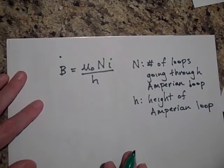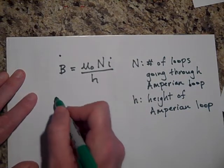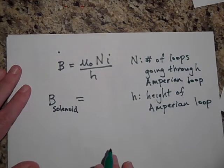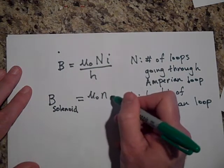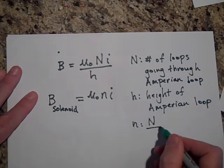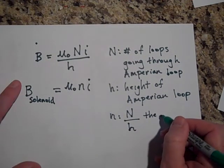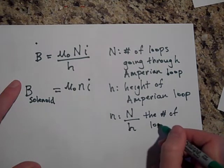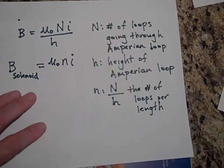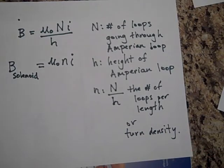Okay, so this is what they do. The number of loops going through divided by H, we're going to give that a new name. So the B inside of a solenoid at the center is equal to mu naught times N times i, where N is going to be the number of loops per length. So this is called the number of loops. It's also called the turn density.